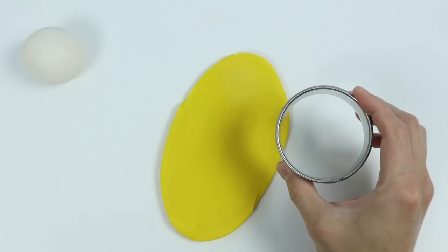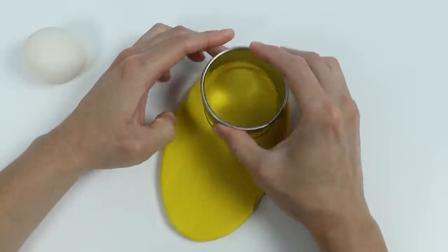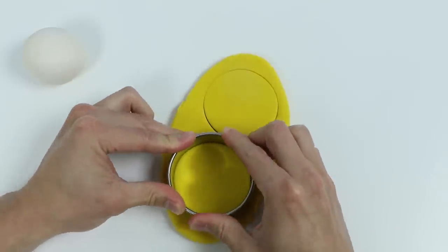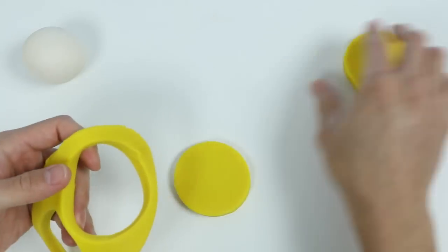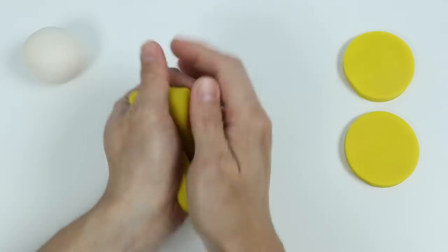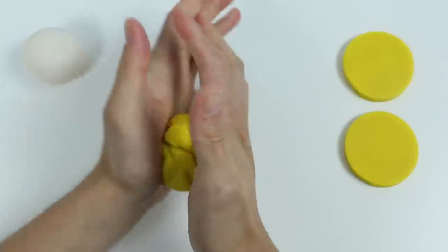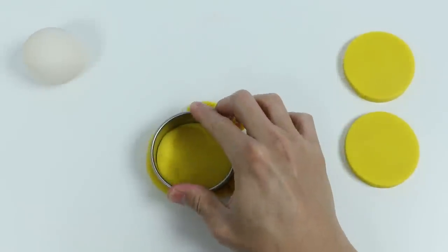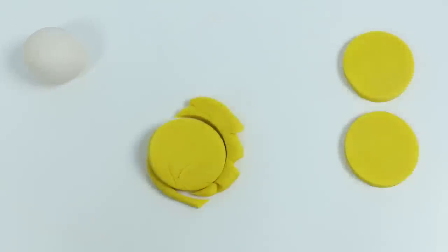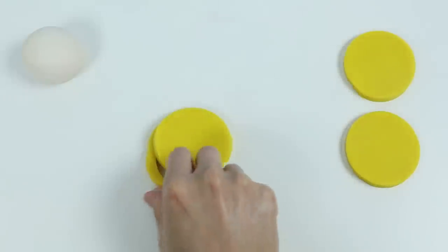Now let's use this circle cutter. Okay, now let's use this extra Play-Doh to make one more yellow circle. Awesome! We'll put this away for now.